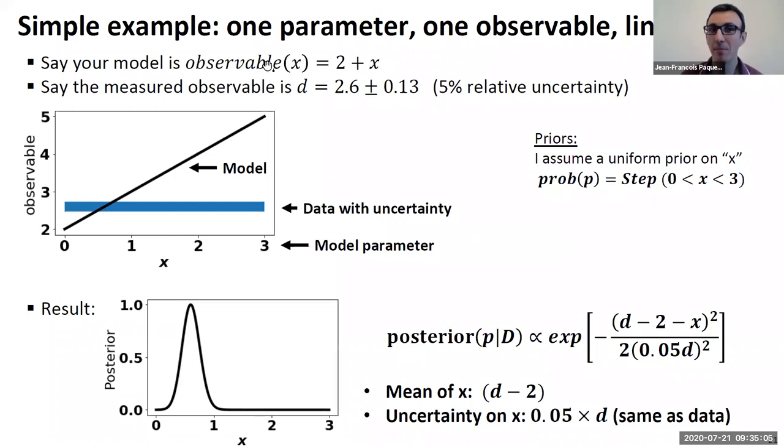So you have some observable that depends on the parameter x. Your model is simply some linear model. And your measurement is some value here that I represent. So this is your observable, this is your model parameter, this is your model, this is the data with some uncertainty. And what you want to do is perform a Bayesian parameter estimation. So you want to constrain x given your model.